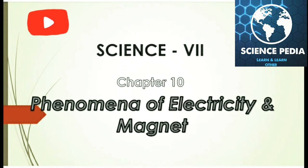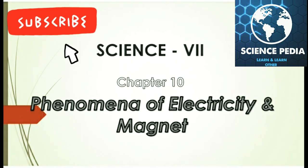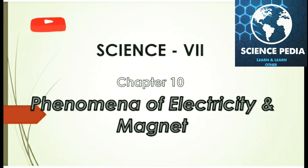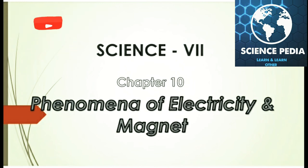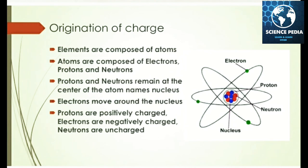Welcome to Science Field. Today I will talk about the phenomenon of electricity and magnetism. This chapter is very important, so let's start. The organization of charge: elements are composed of atoms, and atoms are composed of electrons, protons, and neutrons.